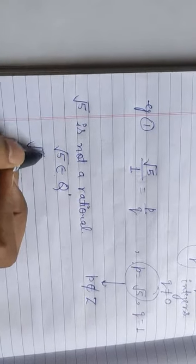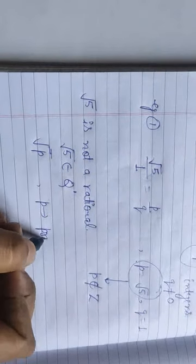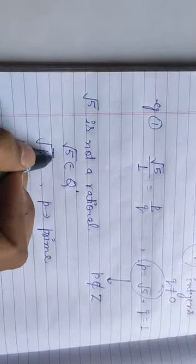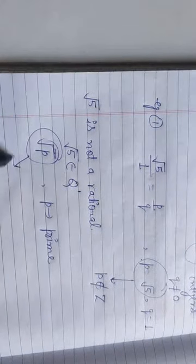That means under root 5 is an irrational number. Similarly, generally you can say root P where P is prime. Every prime number which is under root, that means under root of any prime number, is always an irrational number.